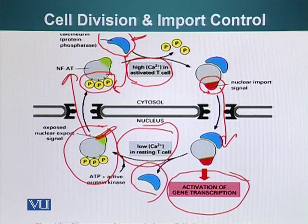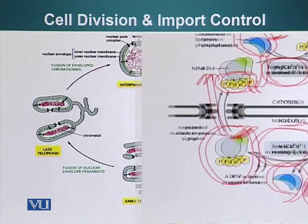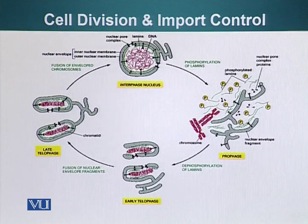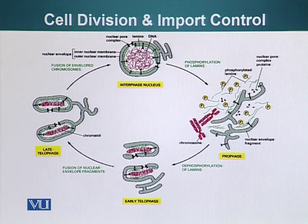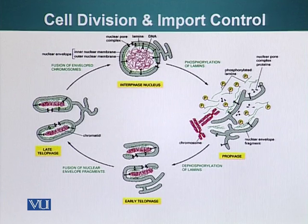Now let's talk about what happens during cell division, because the nuclear envelope falls apart. Once the nuclear envelope falls apart and after the chromosomes have separated, it reforms. When it reforms, why doesn't it include all the proteins which are present in the cytoplasm?